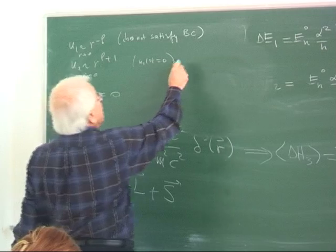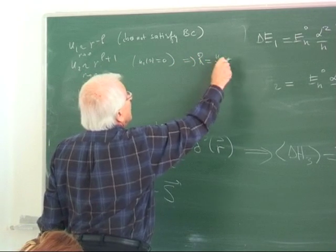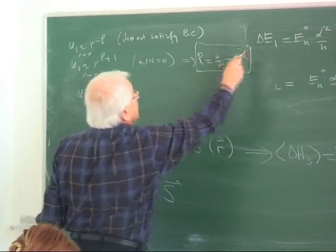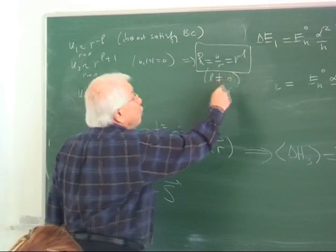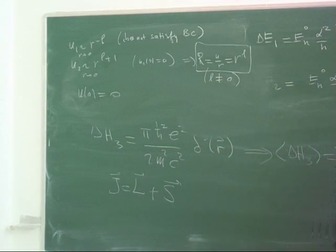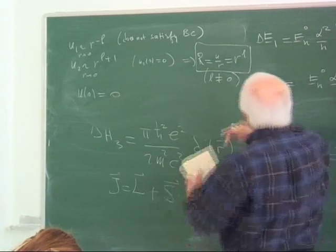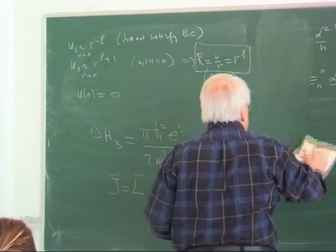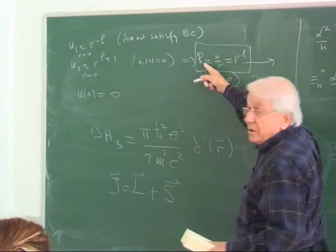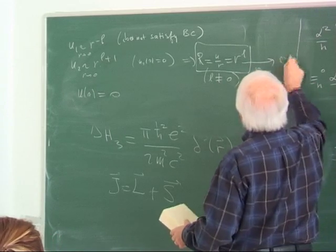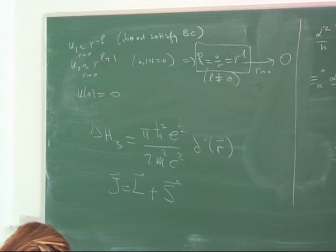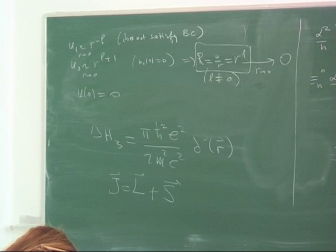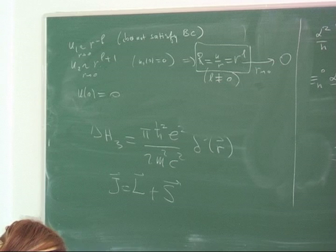So all physical radial solutions with L different from zero vanish at the origin — they go as r^L near r = 0. This does not by itself prove that L = 0 states are nonzero at the origin, but the examples already checked for N = 1, 2, 3 confirm that the L = 0 radial functions do not vanish. Physics dictates we keep only the physical solution.